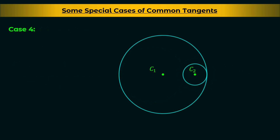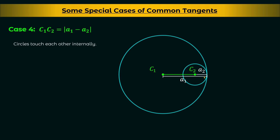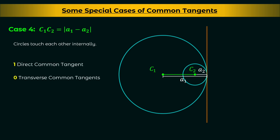In the fourth case, C1C2 = |A1 − A2| — the distance between the centers is equal to the difference of the radii. In this case the circles touch each other internally: they intersect at one point and one circle lies inside the other. You can draw one direct common tangent and no transverse common tangents — the direct common tangents are coincident and the transverse common tangents are imaginary.